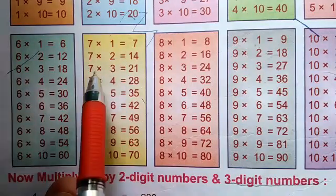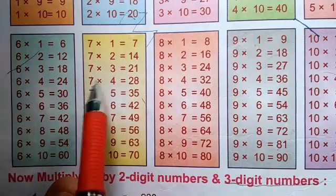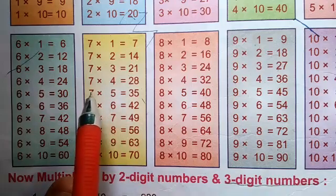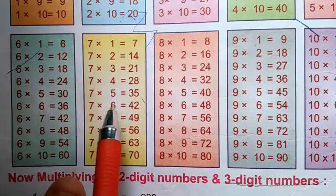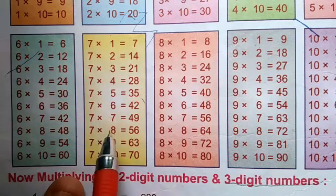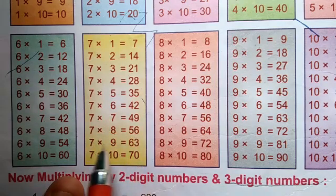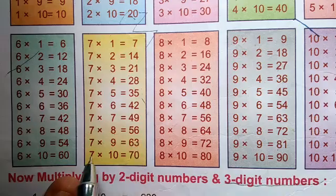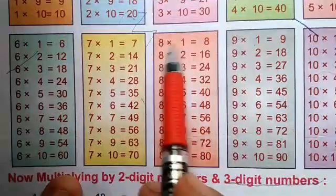7 times 3 is 21, 7 times 4 is 28, 7 times 5 is 35, 7 times 6 is 42, 7 times 7 is 49, 7 times 8 is 56, 7 times 9 is 63, 7 times 10 is 70. Now table of 8: 8 times 1 is 8.